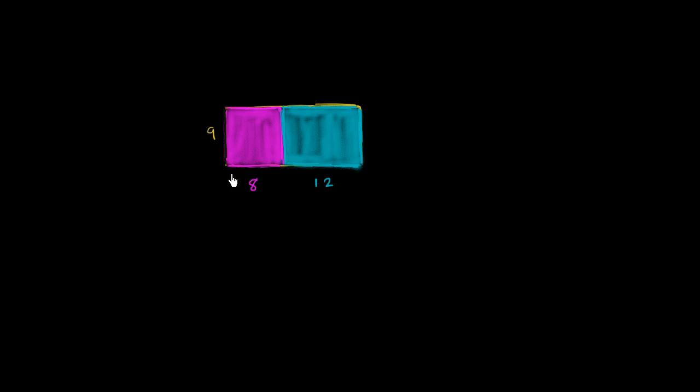So let's just try them out ourselves. First, let's look at the overall dimensions of the larger rectangle. The length is 9, and we're going to multiply that times the width. But what's the width here? Well, the width is going to be 8 plus 12. That's this entire distance right over here.